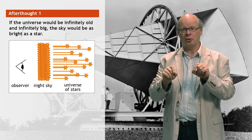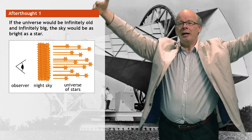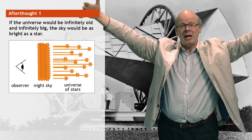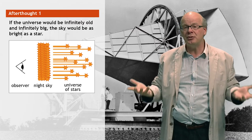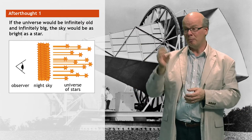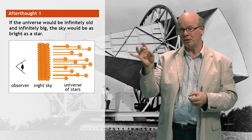It's only 14 billion years old. Therefore, the light of stars that are further than 14 billion light years away from us hasn't reached us yet. And we haven't seen them yet. And that's why the night sky is dark. Because there was a beginning. Because there was a Big Bang.